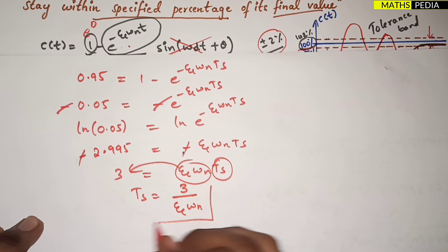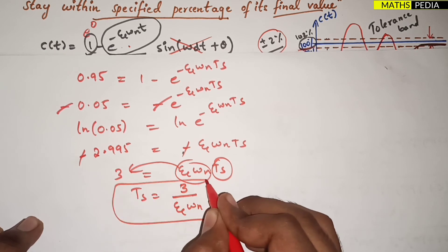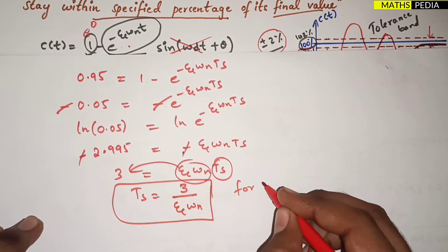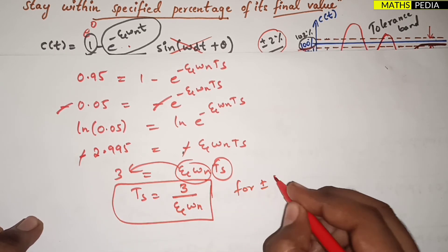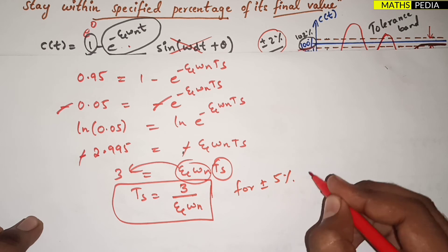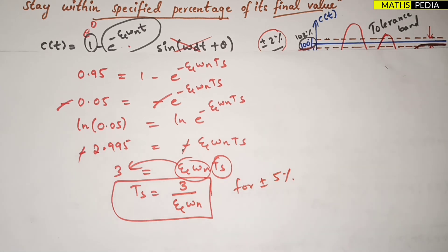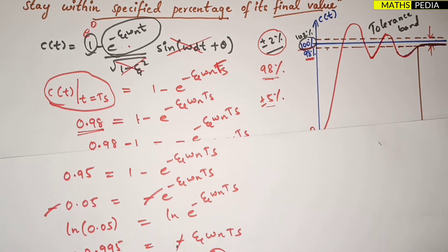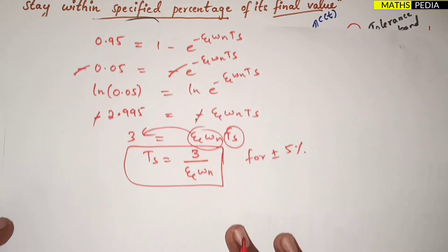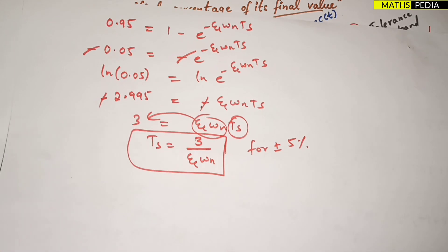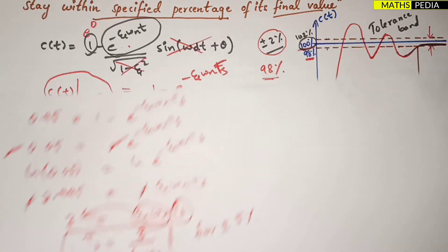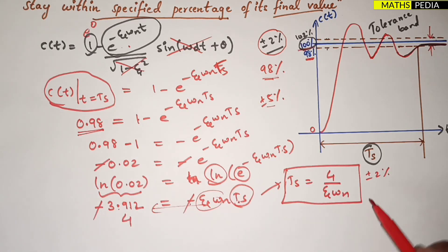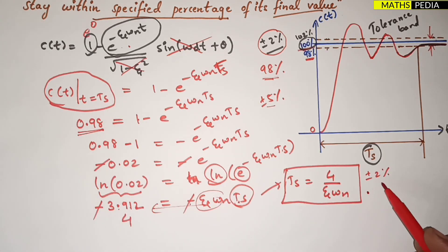Therefore, Ts = 3 / (ζωn) for a plus or minus 5 percent tolerance band. To summarize: Ts = 4 / (ζωn) for plus or minus 2 percent tolerance, and Ts = 3 / (ζωn) for plus or minus 5 percent tolerance. Remember both these formulas.